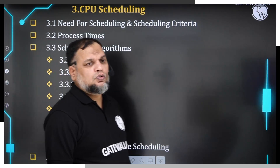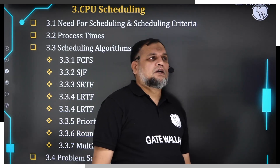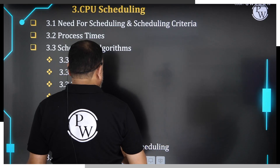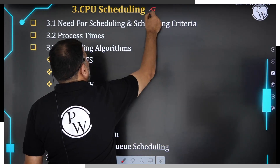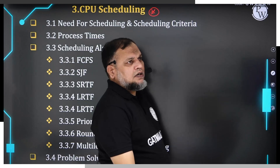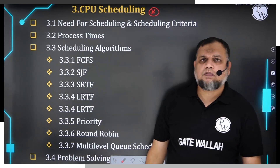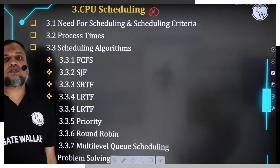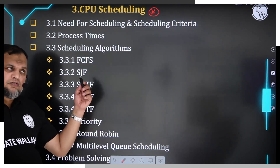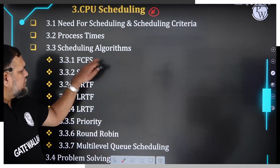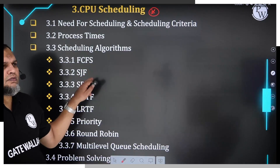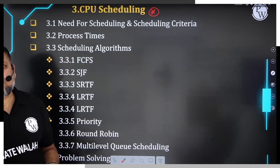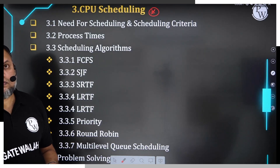The second chapter of Process Management is CPU Scheduling — one of the most important topics from the GATE exam perspective. Quite a few questions have come from this topic; it is numerically oriented, and generally 80 to 90 percent of GATE aspirants solve such problems successfully. There are various types of scheduling techniques like FCFS, SJF, SRTF, LRTF, priority, and round robin — all of these we are going to cover. At the college level these topics are often not fully discussed, but here we will study all scheduling techniques in detail.